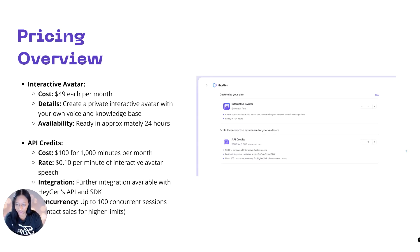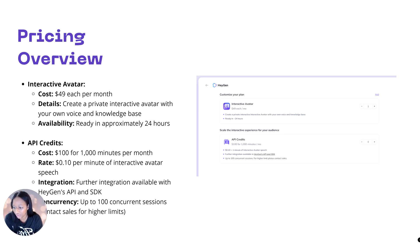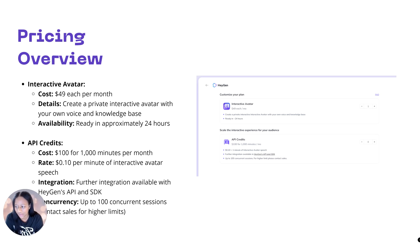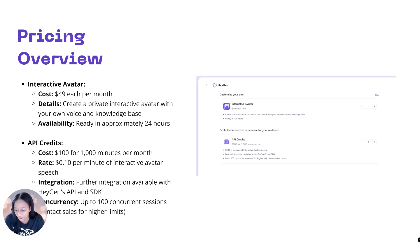Here's a big question: what is the price? Interactive avatar costs about $49 per avatar per month, and you can train multiple avatars. You create a private interactive avatar with your own voice and knowledge base, and it's ready in approximately 24 hours. You can also purchase API credits — the cost is about $100 for 1,000 minutes per month, and you get 100 concurrent sessions. That works out to about 10 cents per minute for interactive avatar speech — that's how long your avatar has to talk. Further integration is available with HeyGen's API and SDK.